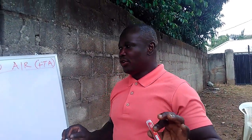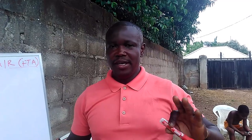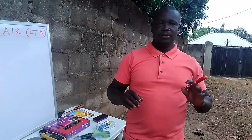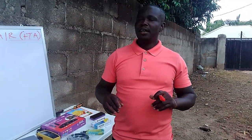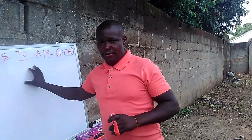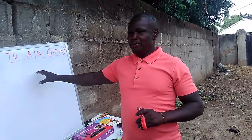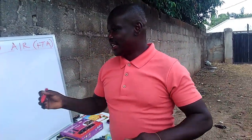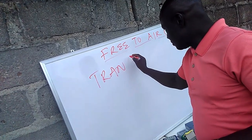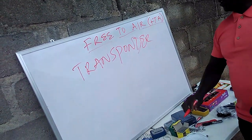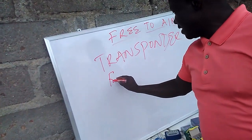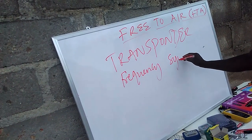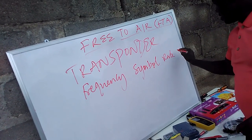We are now done with the theory part of the installation of our free-to-air satellites. The reason I must do this is for us to get familiar with the frequency and the transponder. The transponder comprises of the frequency, the symbol rate, and the polarization.